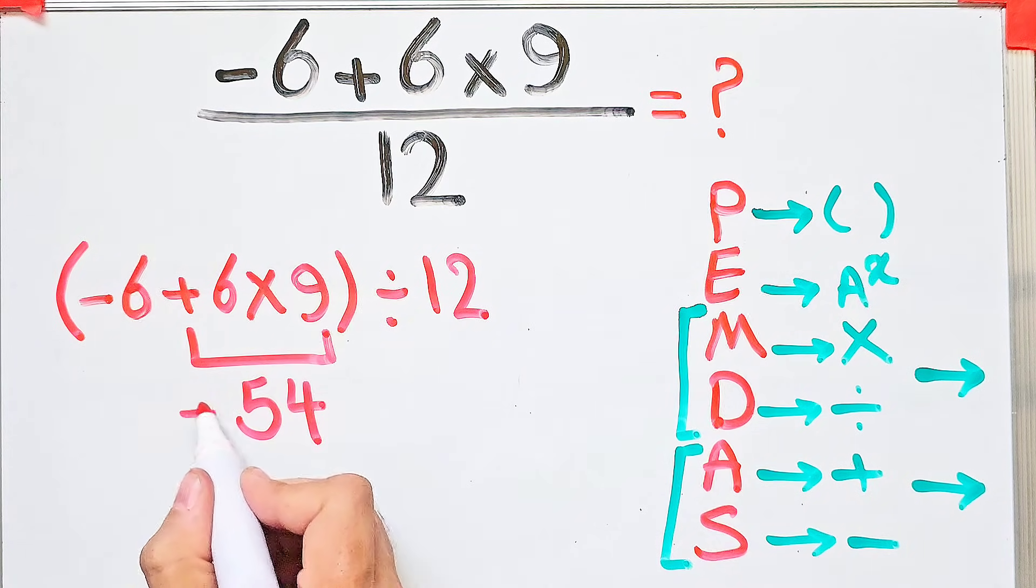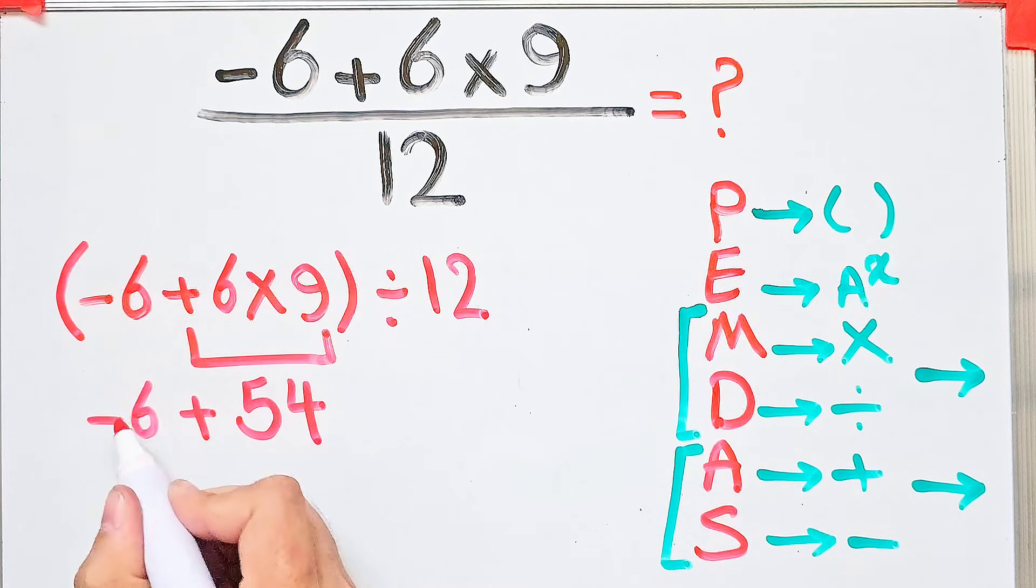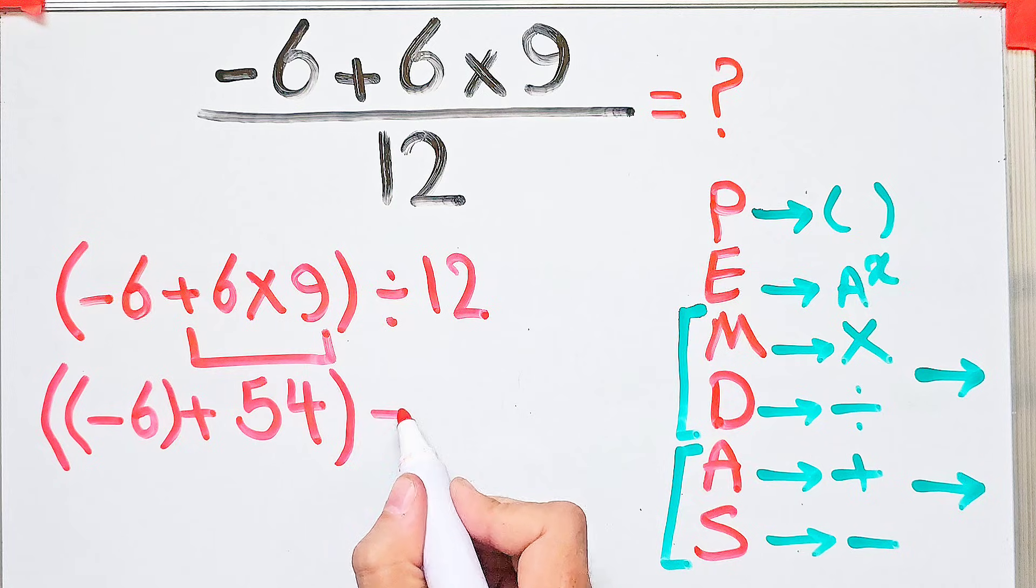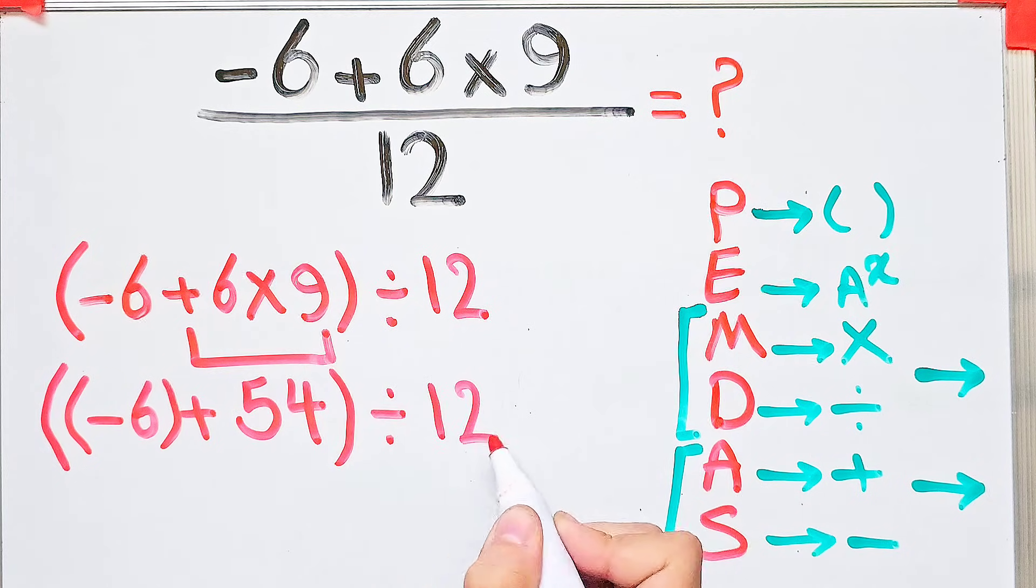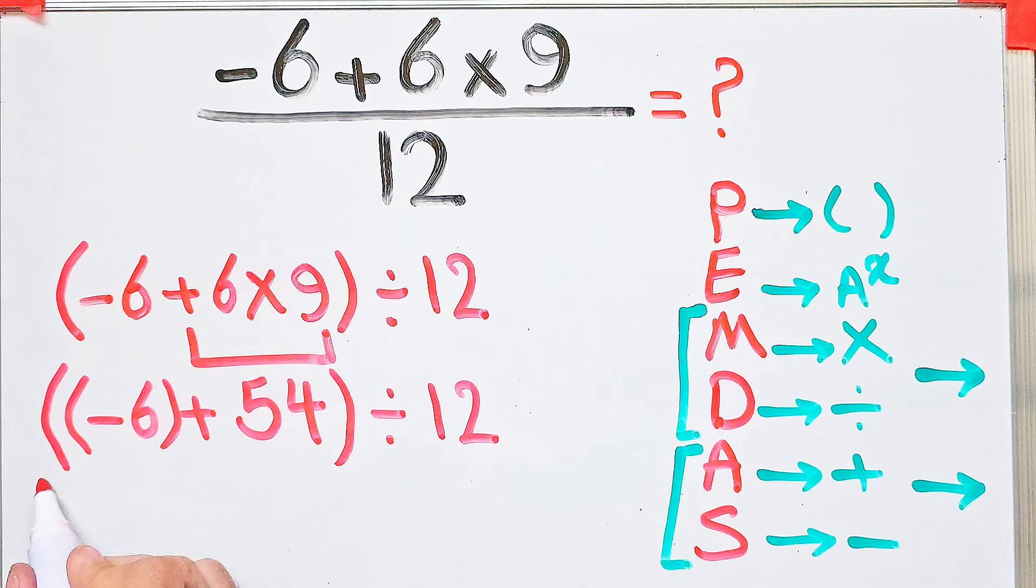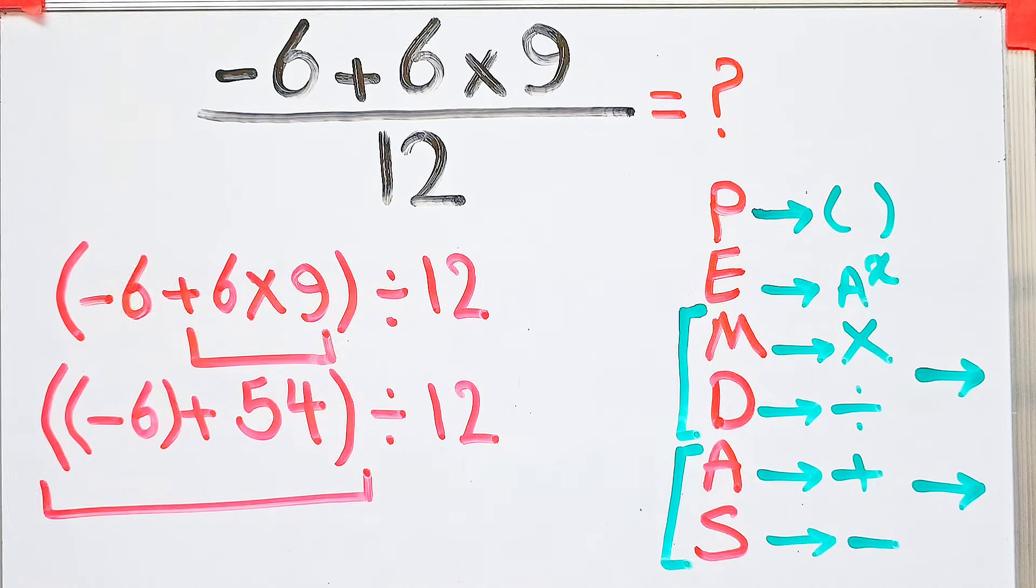Now we have negative six plus 54, then divided by 12. Again, we simplify the parentheses. Inside the parentheses, we have negative six plus 54. Negative six plus 54 equals 48.